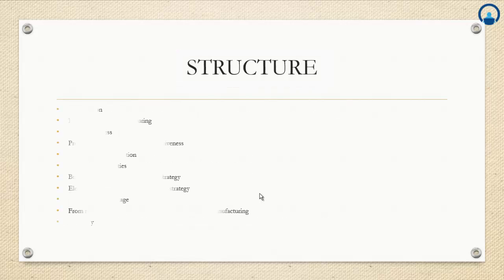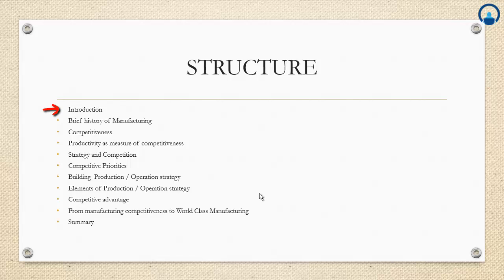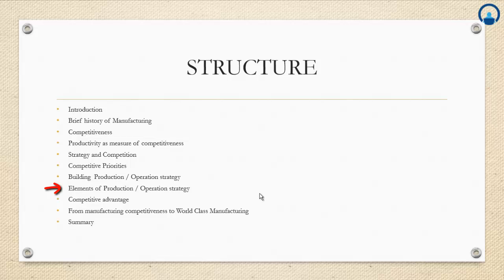The structure of this presentation: the first part will be an introduction, then a brief history of manufacturing, the third part will cover competitiveness, then productivity as a measure of competitiveness, strategy and competition, competitive priorities, building production or operations strategy on competitive priorities, elements of production or operations strategy, competitive advantage, and from manufacturing competitiveness to world-class manufacturing, with a summary at the end.